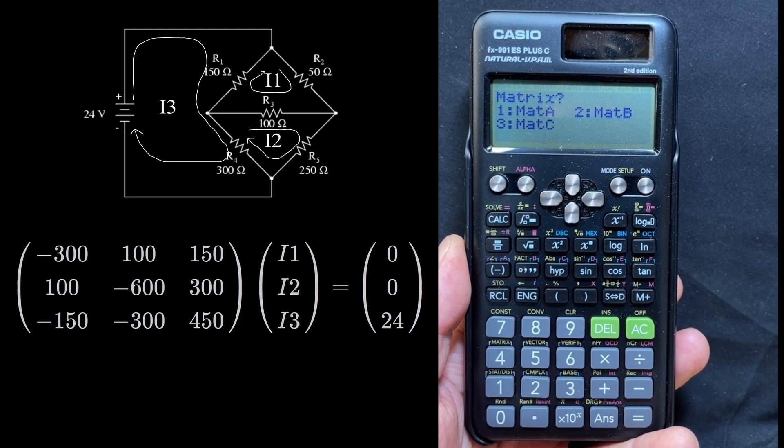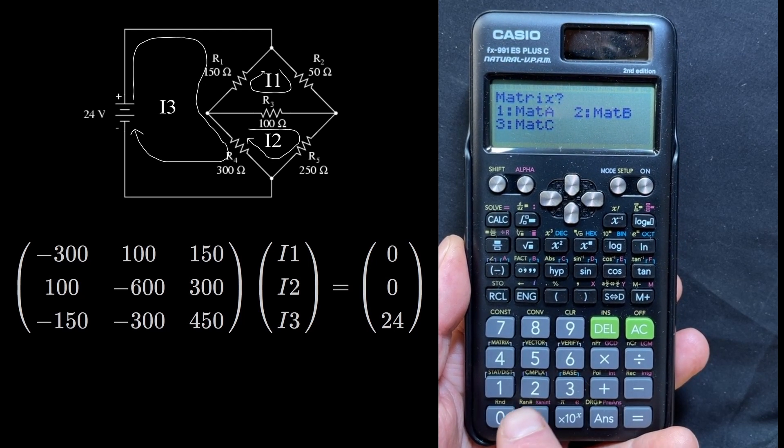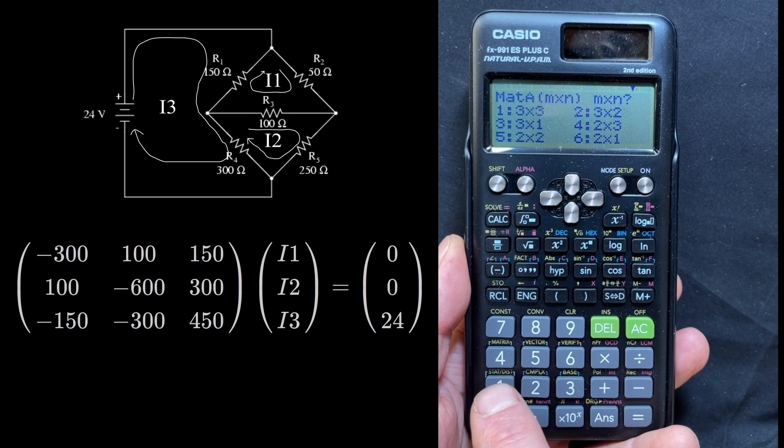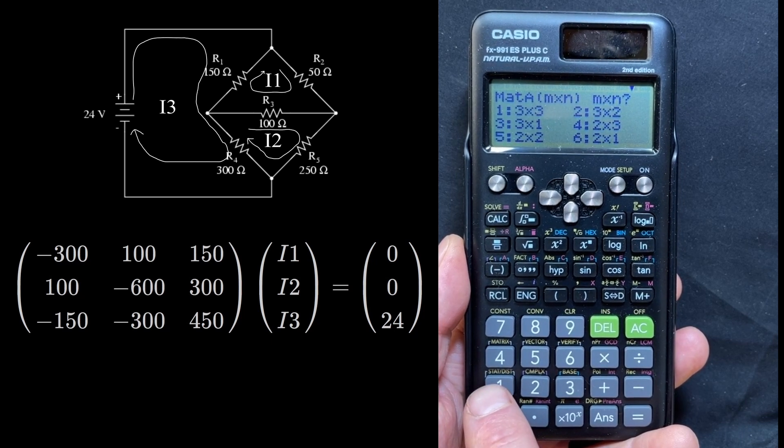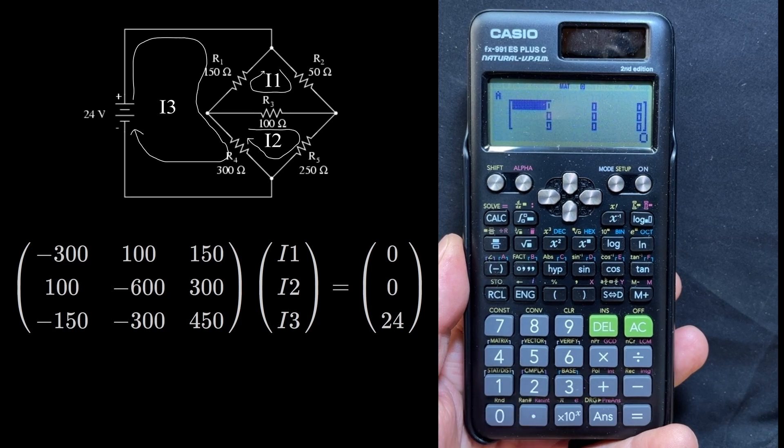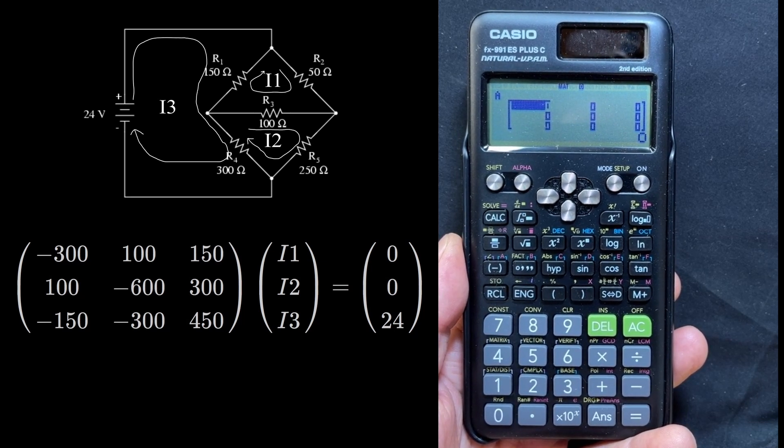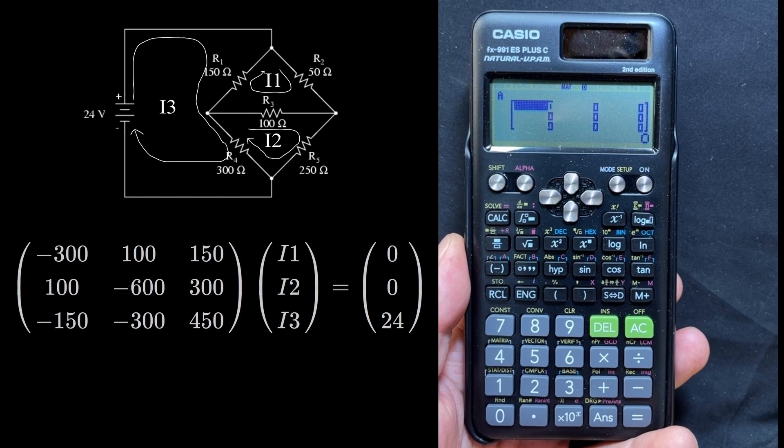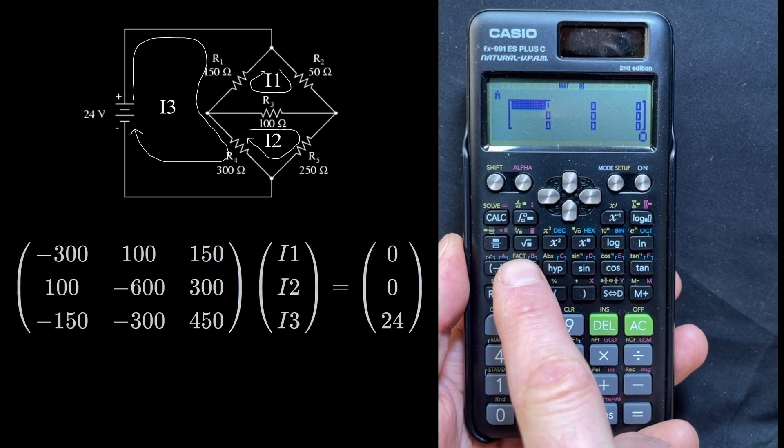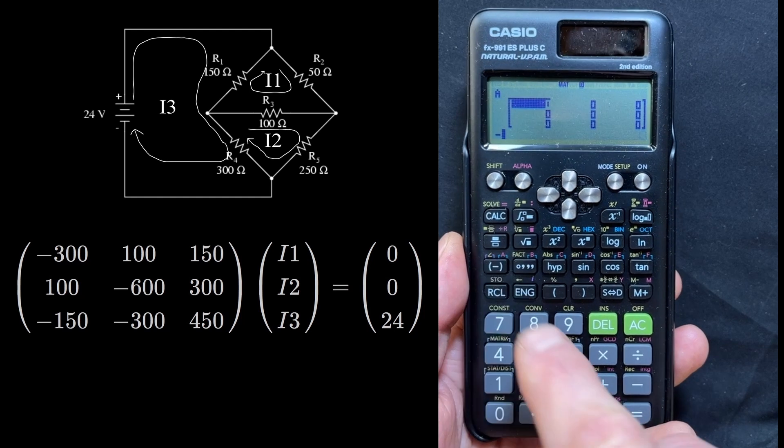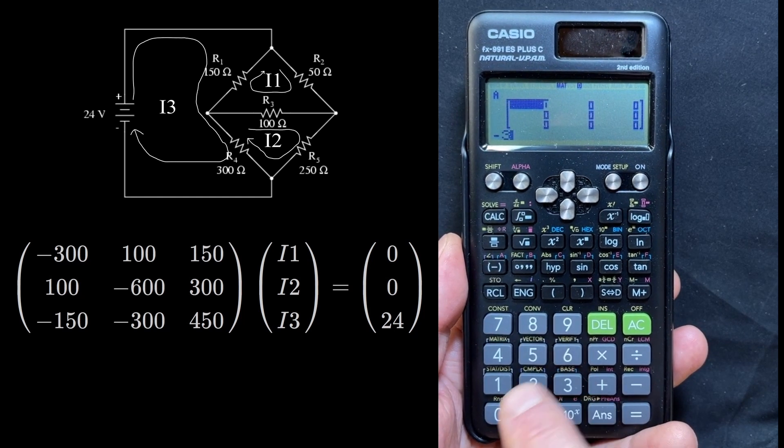Now it's asking us what matrix do we want to set up. Let's start off with setting up matrix 1, or matrix A. Matrix A is a 3x3 matrix, and now we can enter the numbers into the 3x3 matrix. The way we do that is we enter the value, so we have minus 300, and then every time we have a number we hit enter and it moves on to the next number.